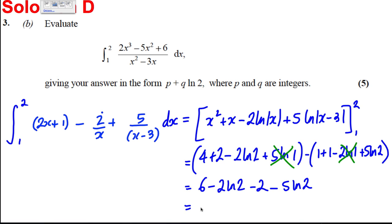6 - 2 is 4, and -2 ln 2, -5 ln 2 is -7 ln 2. So therefore our p is equal to 4, our q is equal to -7, and we have it in the right form, so we're done.